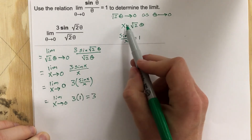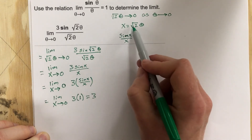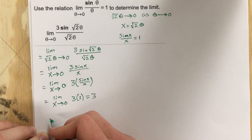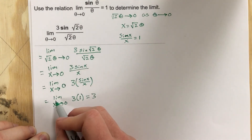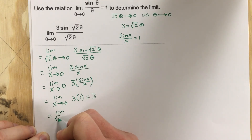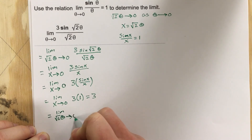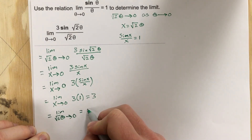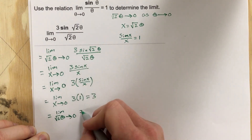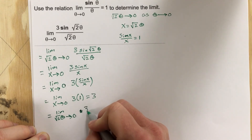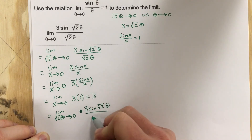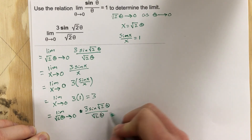We can replace the x value with our root 2 theta, or just theta. The limit as root 2 theta approaches 0 of 3 sine root 2 theta over root 2 theta is equal to 3.